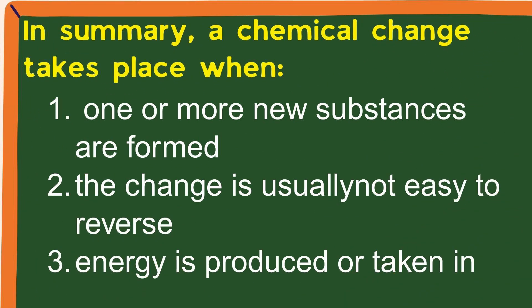In summary, a chemical change takes place when: 1. One or more new substances are formed. 2. The change is usually not easy to reverse. 3. Energy is produced or taken in.